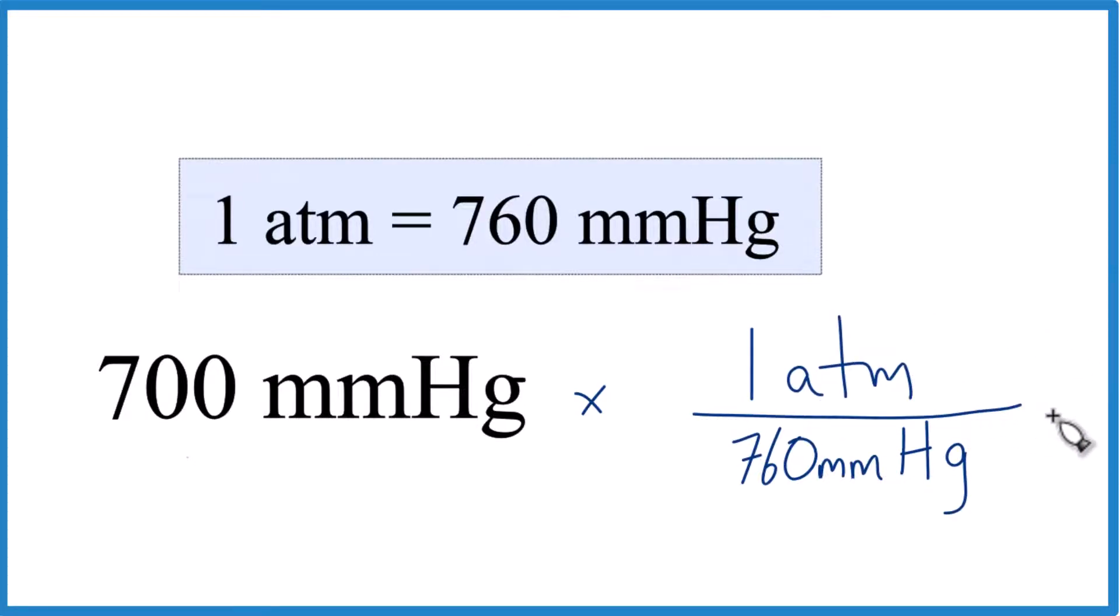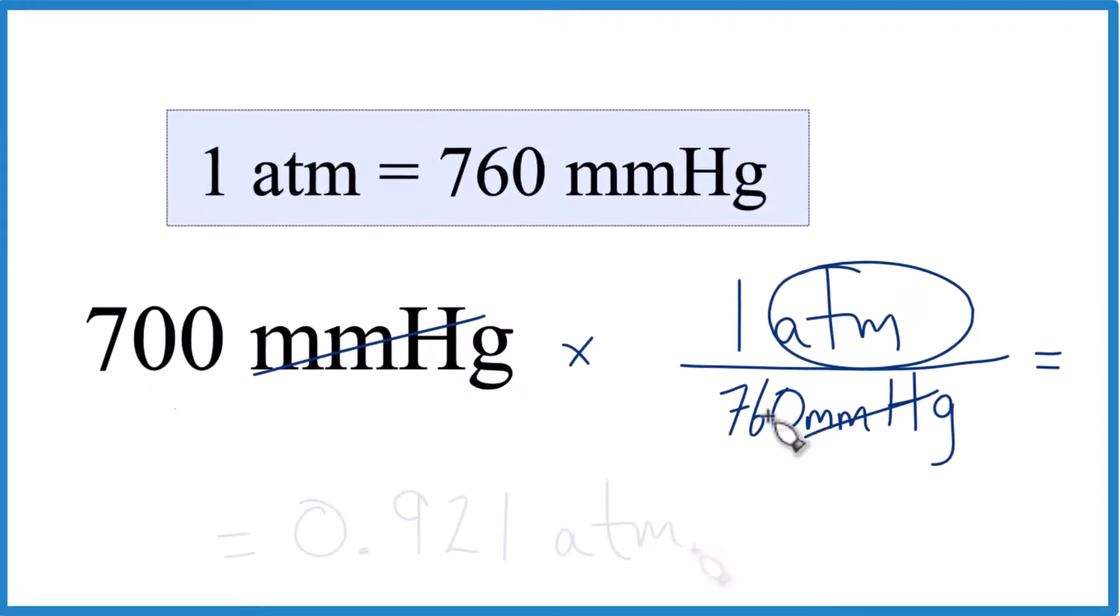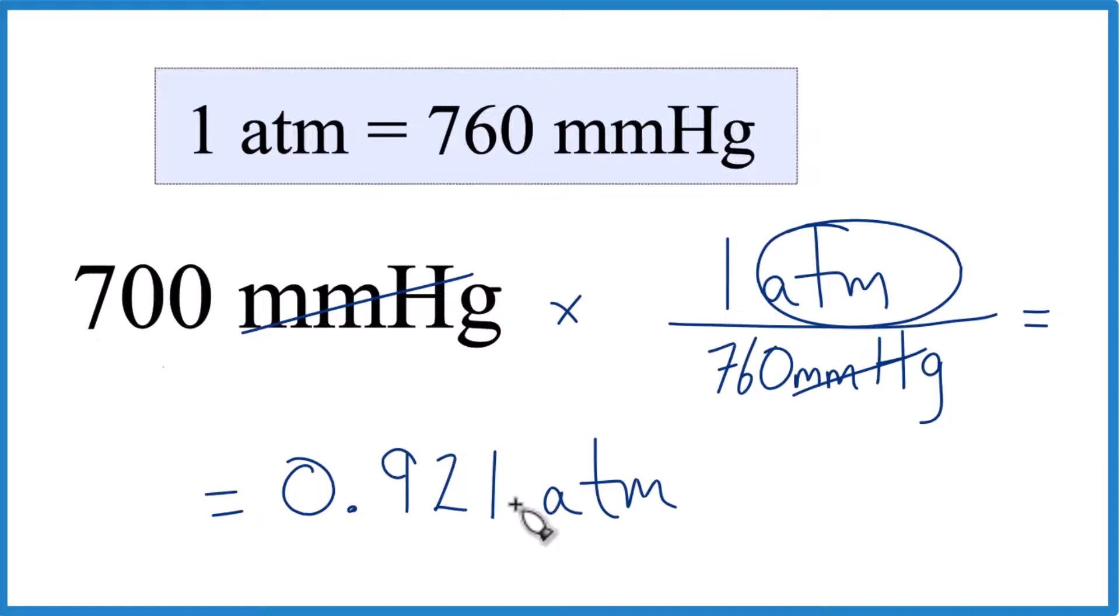So now when we do the math, millimeters of mercury cancels out, we're left with atmospheres. That's what we're looking for. So essentially we divide 700 by 760. We get 0.9210.